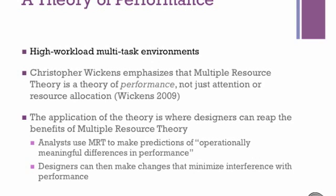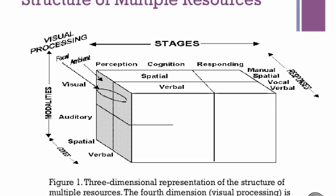An analysis based on Multiple Resource Theory describes the cognitive, sensory, and manual processes a human must perform while engaging in an activity, and shows where simultaneous processes are using the same resources. Some simultaneous processes complement each other, while others interfere with performance and cause breakdowns.